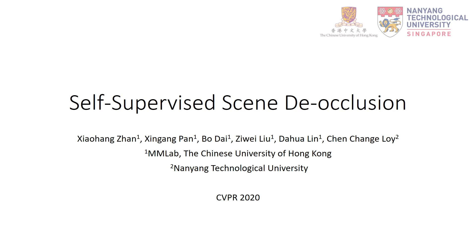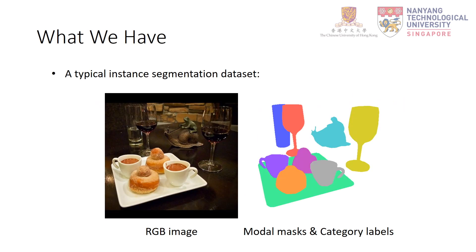In this work, we define and solve the CMD occlusion problem in a self-supervised manner. What we have is merely a typical instance segmentation dataset, including RGB images, modal masks, and category labels. The modal masks are instance segmentation masks that represent visible parts of objects. We have no annotation of occlusion ordering or amodal masks.